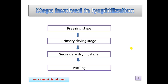The lyophilization process is performed using four steps: first, the freezing stage; second, the primary drying stage (sublimation); third, the secondary drying stage; and fourth, the packing stage.